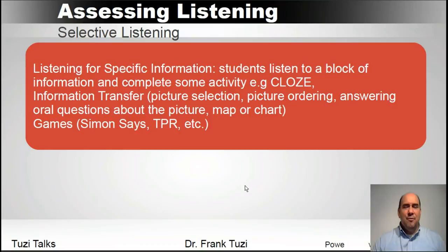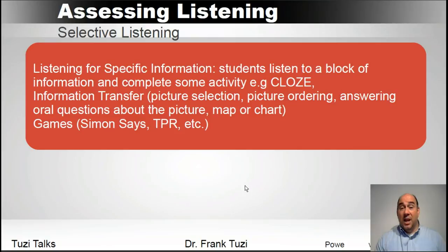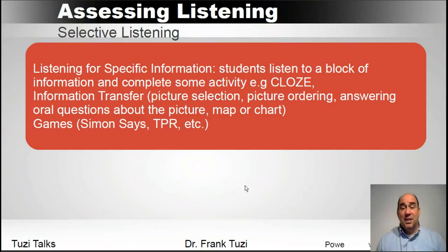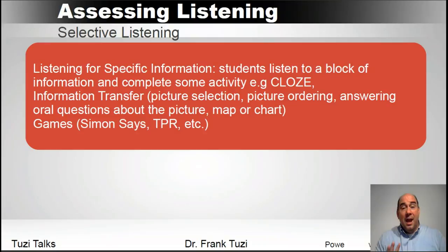Another way is selective listening, where students are listening for specific information. I liken this to a comprehension test — you tell students to read the questions first so they know what they're looking for. In selective listening, they have questions or have to put things in order on a little graph as they listen. Cloze is a great activity for this. You can also do information transfers, which require a little more speaking ability — a great way to have students listen to greater bits of information, then answer the question their partner has. Information transfer is often used with pictures, where one group has one picture and the other group has a different picture with different bits of information, and they've got to find the missing pieces.